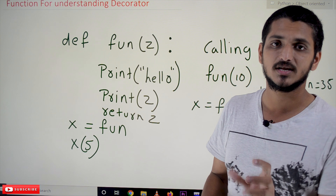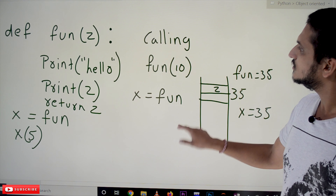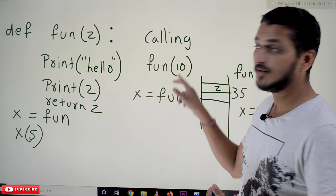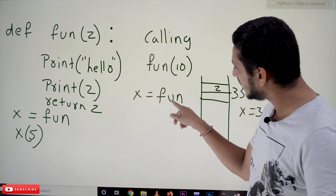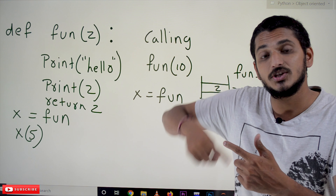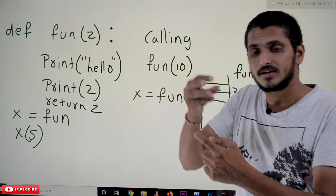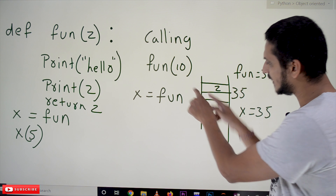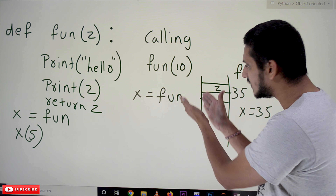So we can define a function variable. One more important point you have to understand: calling a function fun(10) means here we are calling the function. Don't get confused — x is equal to fun, but fun(10) means we are executing the function and whatever the function returns, that value is assigned to x.